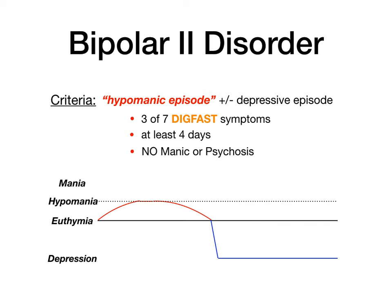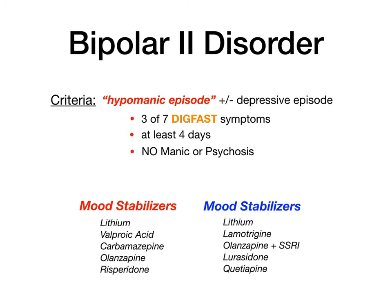Treatment for bipolar 2 is really the same as bipolar 1, with a little more emphasis on mood stabilizers in the depressive column — more in the realm of quetiapine or lurasidone, which are atypical second-generation antipsychotics. The subtleties are beyond this lecture's scope, and mood stabilizers will get their own video.